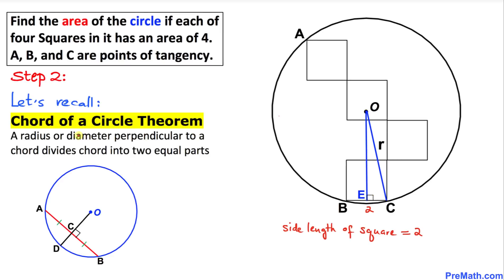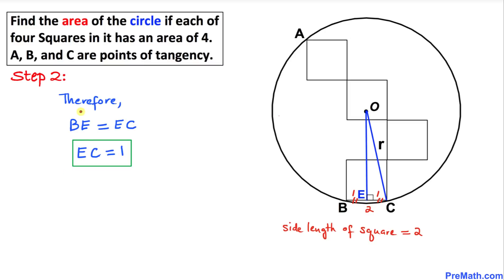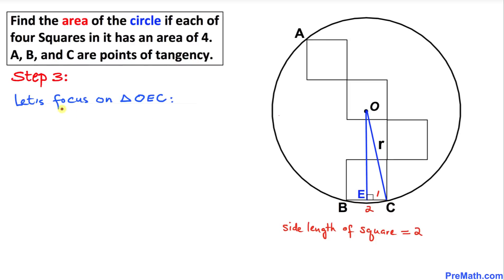Now let's recall the chord of a circle theorem: a radius perpendicular to a chord divides the chord into two equal parts. Therefore, chord BC is divided into two equal parts, BE and EC. Each of them is one unit, so BE equals EC, and EC equals one.